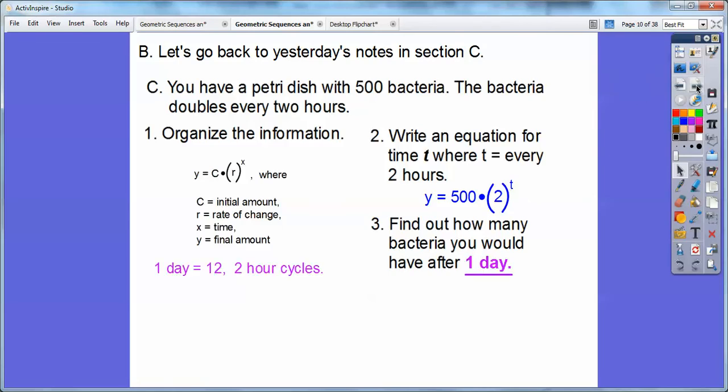So one day was, remember, one day equals 12 two-hour cycles. So T would be 12 in this case. So I put a 12 right there for one day because it asked us after one day, how much would it be? Well, remember, this doubles every two hours. So in one day, which is 24 hours, there's 12 two-hour cycles in one day.